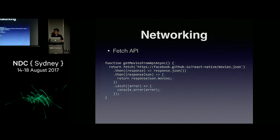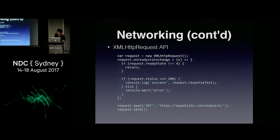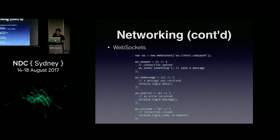If your app doesn't have networking features, it's basically a useless app. Every app needs to talk to the outside world. You can use the Fetch API, which is natively supported in React Native, returns a promise object, and is asynchronous. Or you can use XMLHttpRequest, WebSockets, or third-party modules. Socket.io is one of them, where you can use sockets to connect to your backend server.